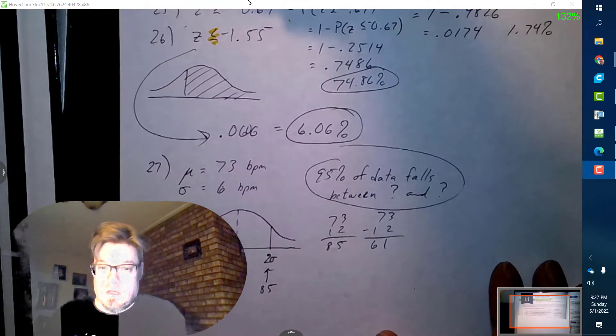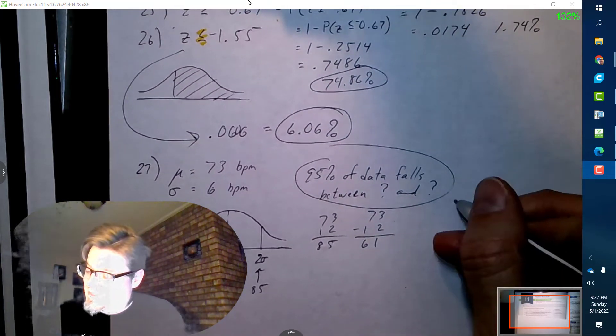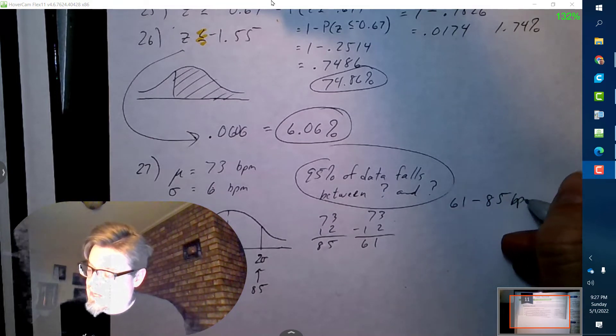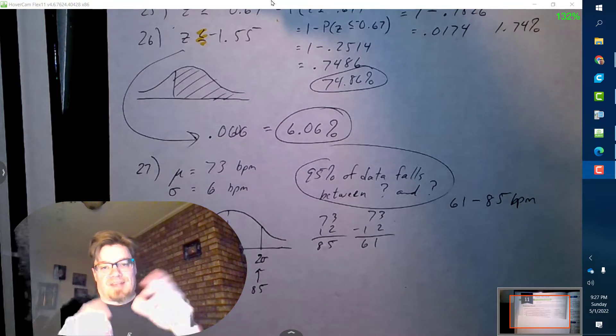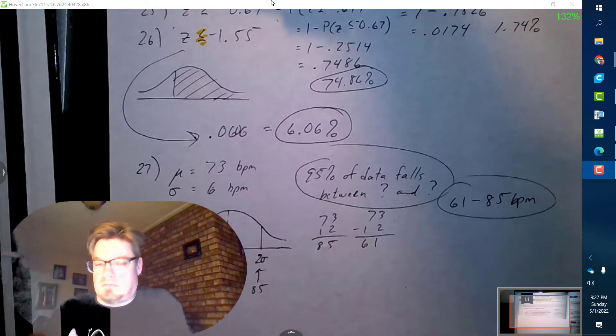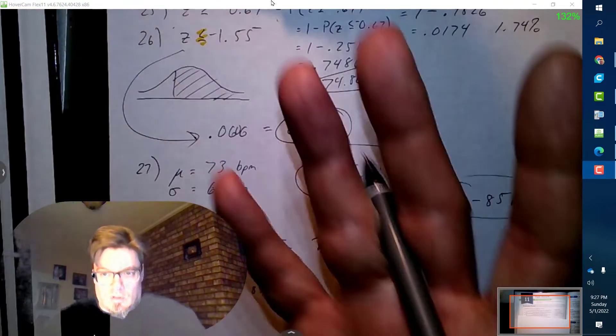Okay, so this means that 95 percent of my data is going to fall between 61 and 85 beats per minute. So if this happens, you would call that most people have this as their heart rate.